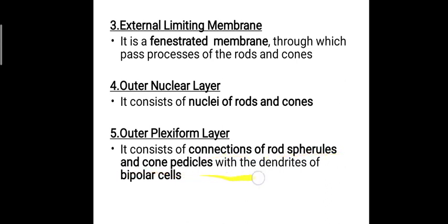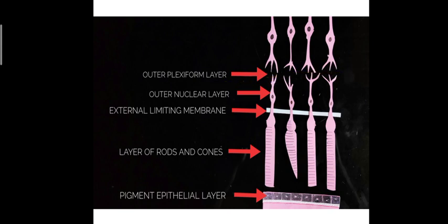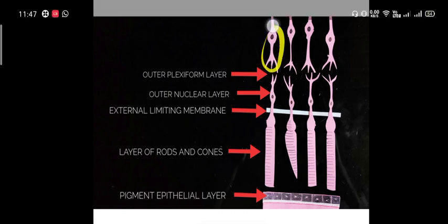The fifth layer is the outer plexiform layer, which consists of connections between the rod spherules and cone pedicles with the dendrites of the bipolar cells. In the diagram, you can see the rods and cones, the external limiting membrane, the outer nuclear layer, and then the outer plexiform layer where connections with bipolar cell dendrites occur.